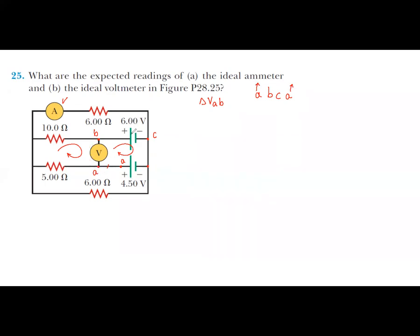The loop rule: summation of delta V equals to zero. We start by A, B. Delta VAB, I want to calculate it, plus delta VBC, plus delta VCA equals to zero.